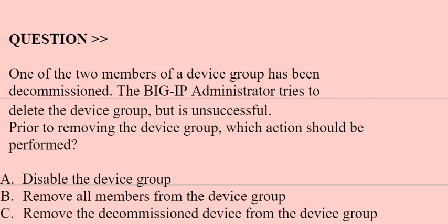Question: One of the two members of a device group has been decommissioned. The big IP administrator tries to delete the device group but is unsuccessful. Prior to removing the device group, which action should be performed?